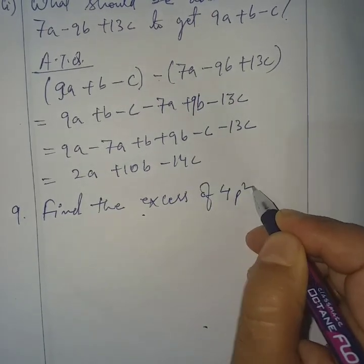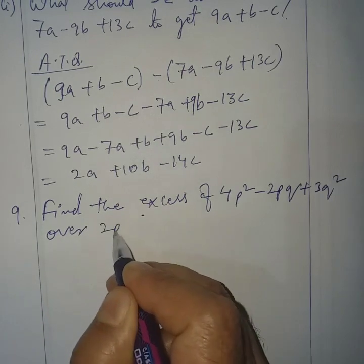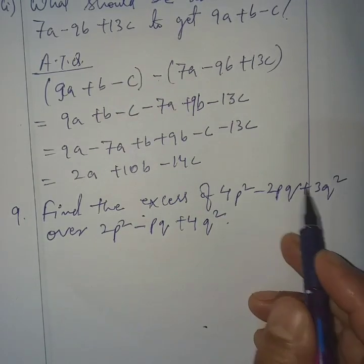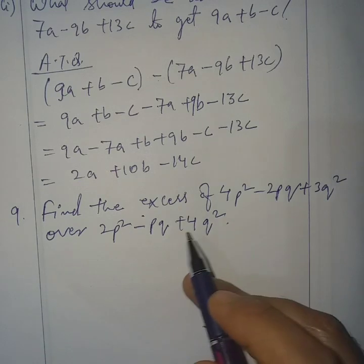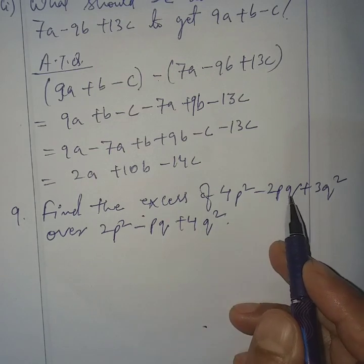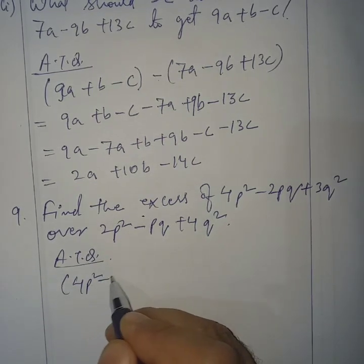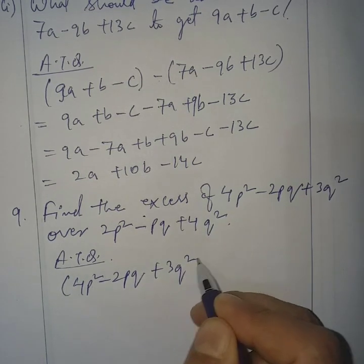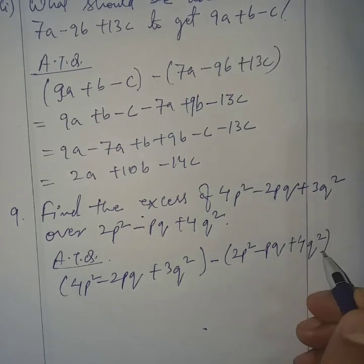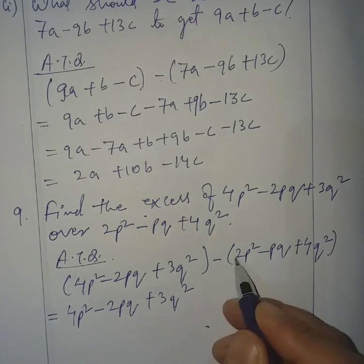Question number 9: find the excess of 4P squared minus 2PQ plus 3Q squared over 2P squared minus PQ plus 4Q squared. This one is greater, so find the excess of this over this means we subtract this one from this. According to the question: 4P squared minus 2PQ plus 3Q squared, minus 2P squared minus PQ plus 4Q squared.